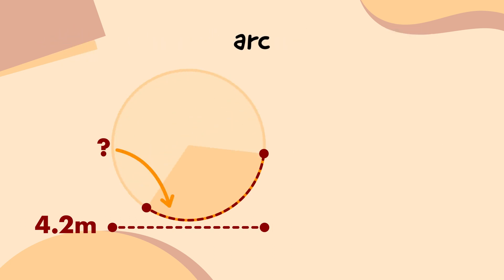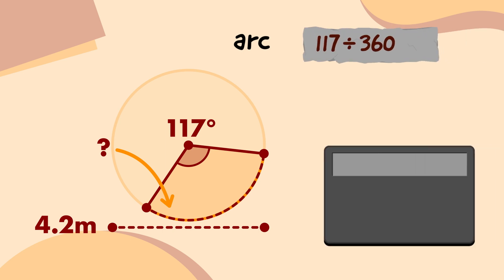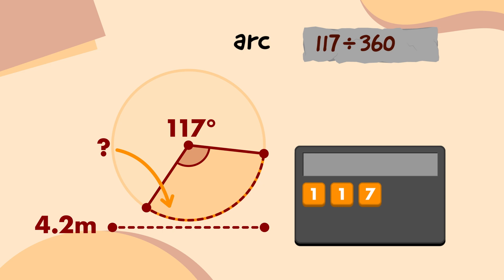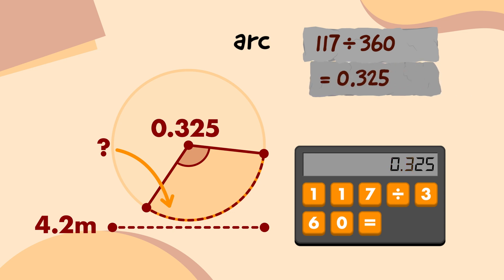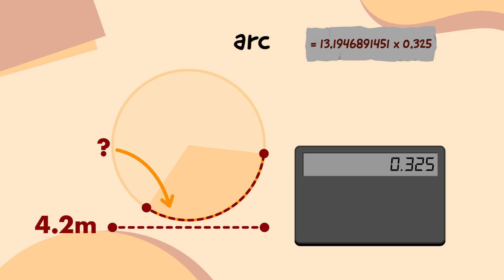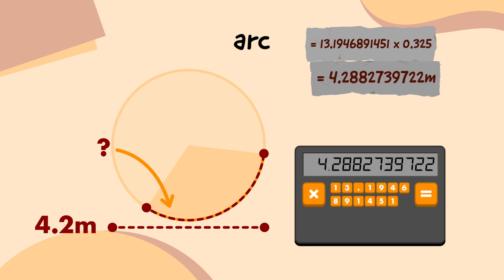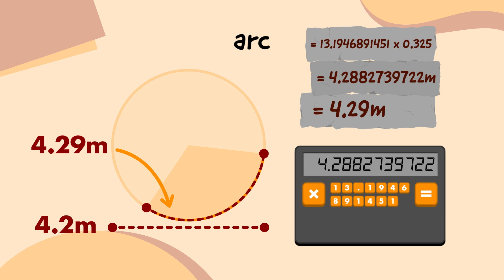Now I know the circumference, I can work out the arc length. The central angle of this portion is 117 degrees, so I'll divide 117 by 360. On my calculator, I'm going to type 117, press the divide button, type 360, and press the equals button. Then I'm going to multiply that by the circumference, which gives me 4.2882739722. That means this arc of the second emblem circle is 4.29 metres long.